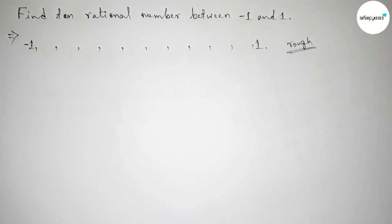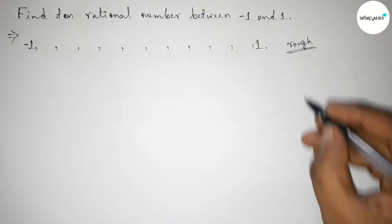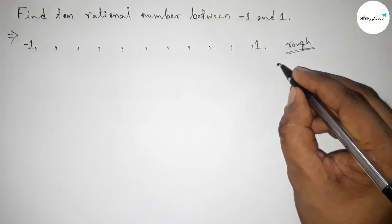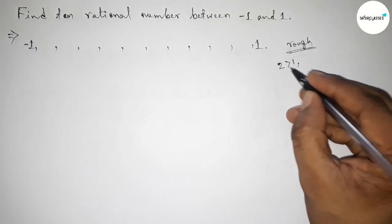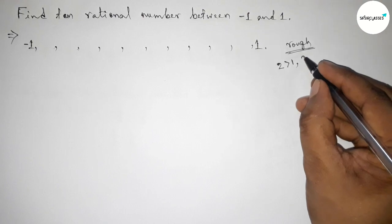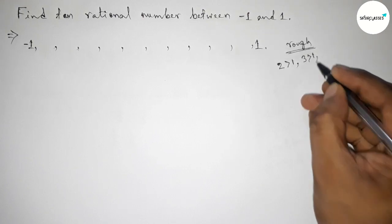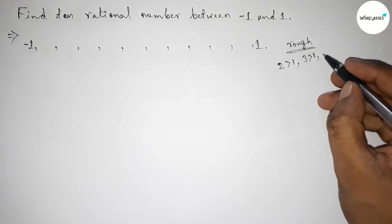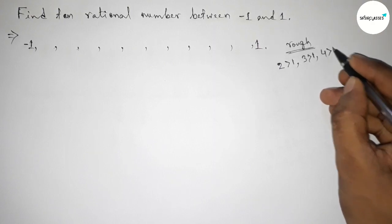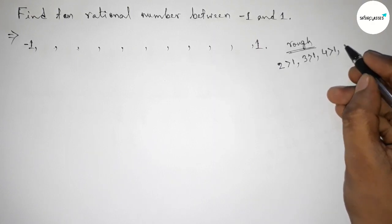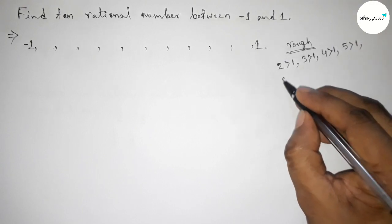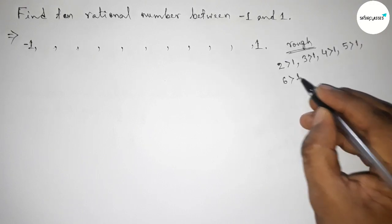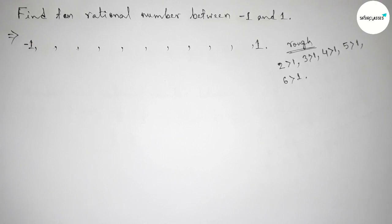Now for some important calculation: first taking a number greater than 1, so 2 is always greater than 1. Again taking 3, which is greater than 1. Then 4, which is greater than 1. Then 5, which is greater than 1. And last, 6, which is greater than 1.